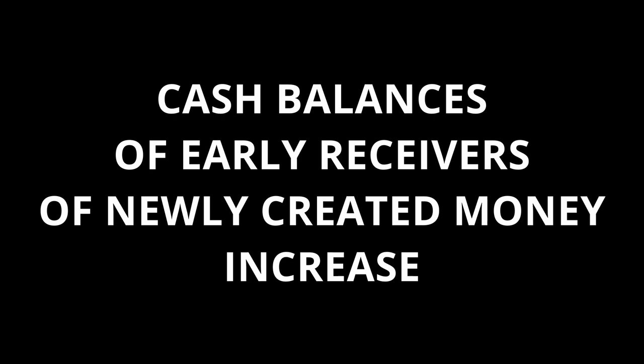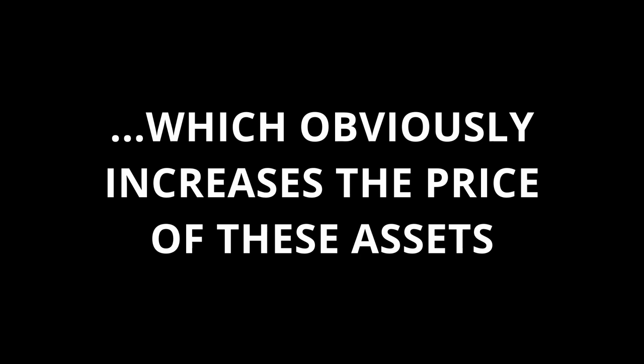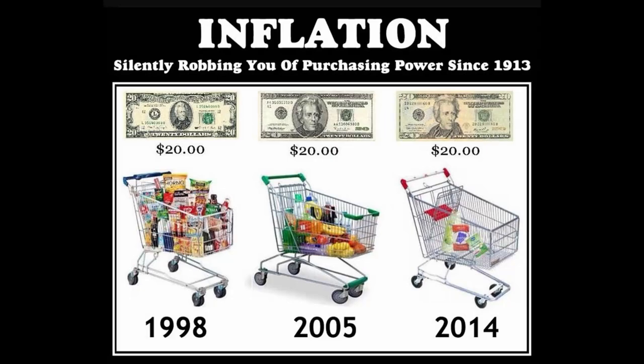With an increase in the stock of money, the cash balances of the early receivers of the newly created money increase. Correspondingly, the marginal utility they give to money decreases, and the individuals in question buy either investment or consumption goods, thus bidding up the prices of those goods and increasing the cash balances of their sellers. With this step-by-step process, the price of goods will increase only progressively and affect both the distribution of income and wealth as well as the different price ratios.